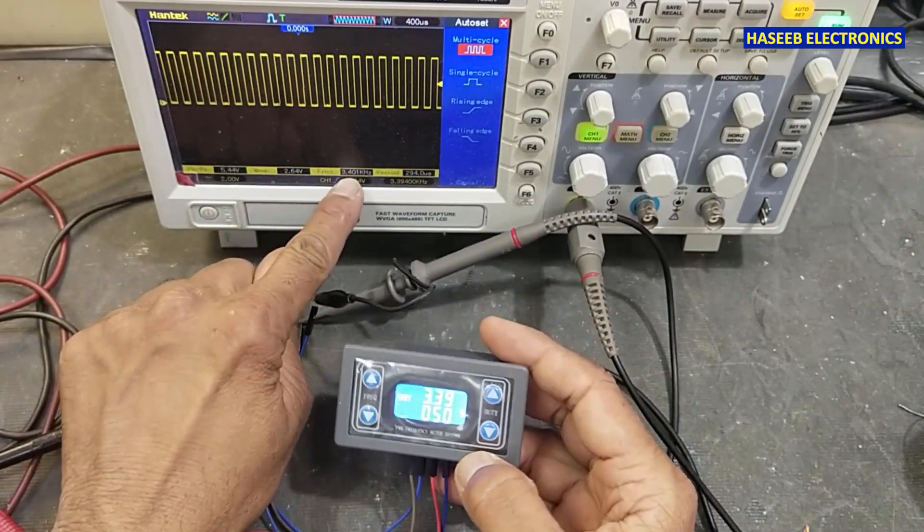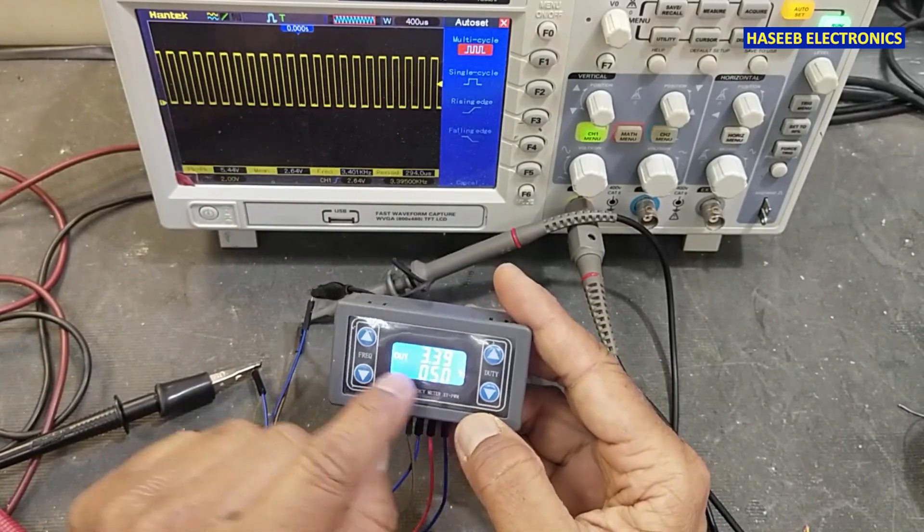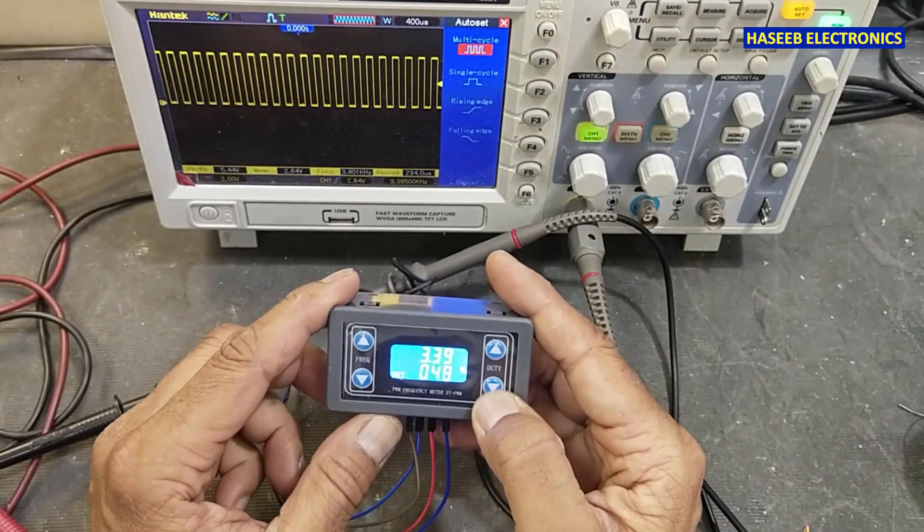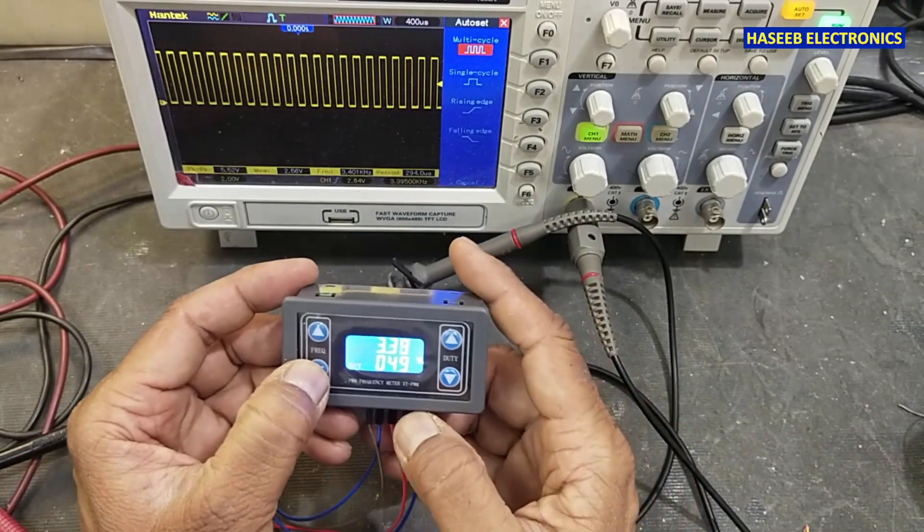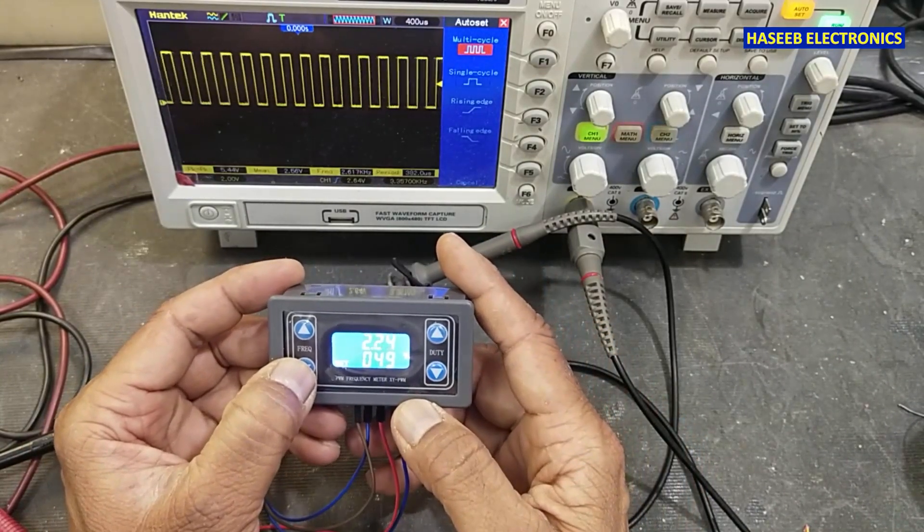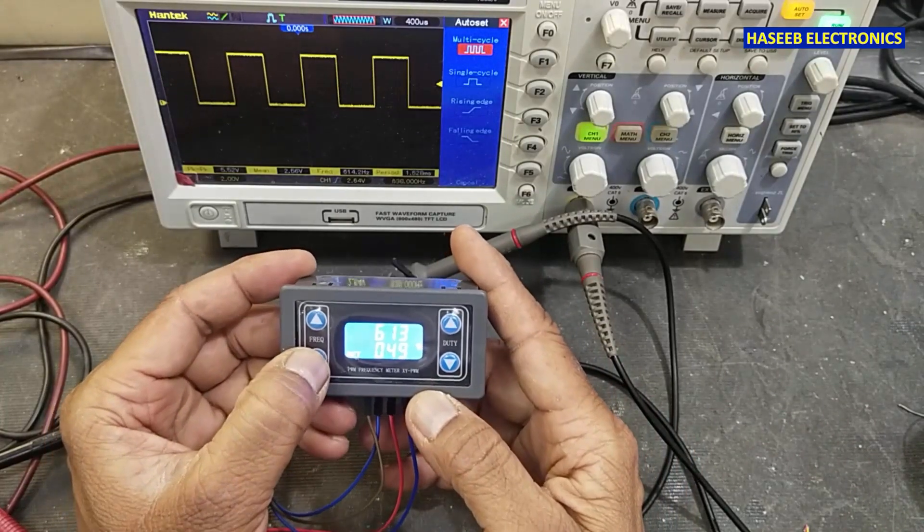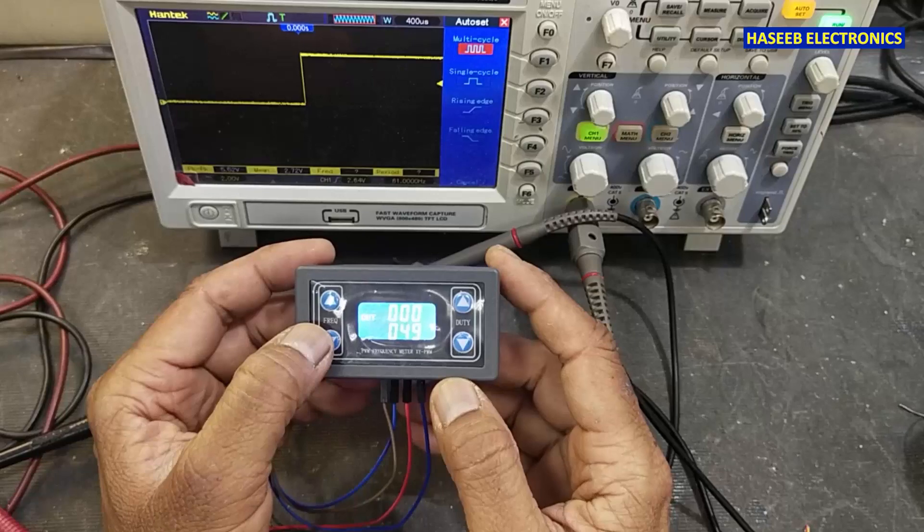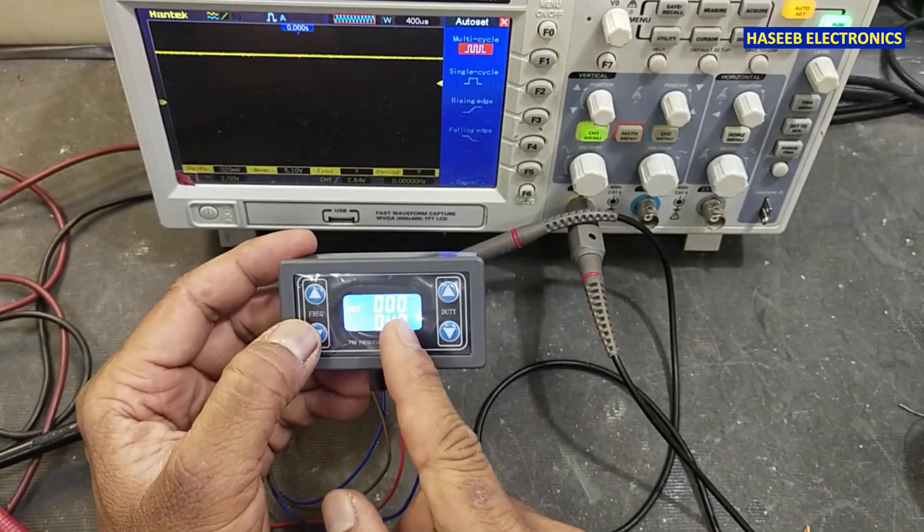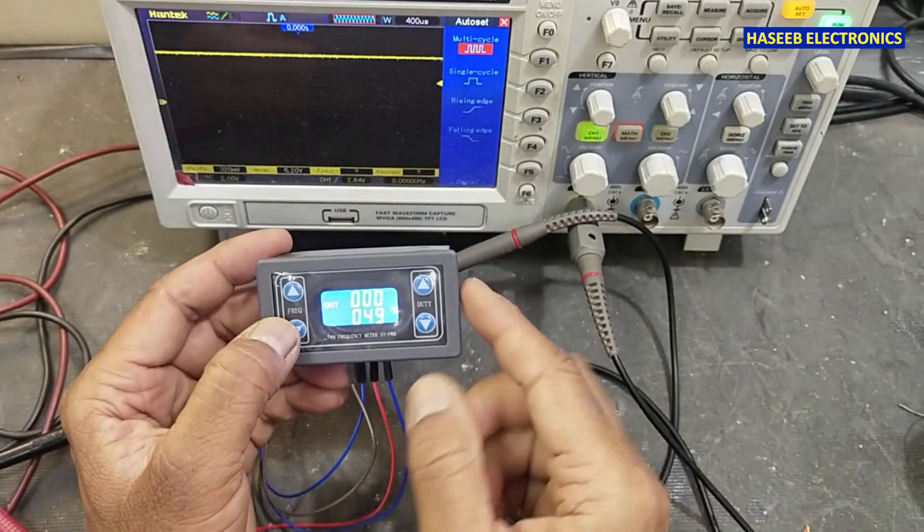It is 3.4 kHz and 3.39 kHz. Here we can decrease the duty cycle and here is frequency. First I will lower the frequency. Here is 0 Hz, so there is no frequency.